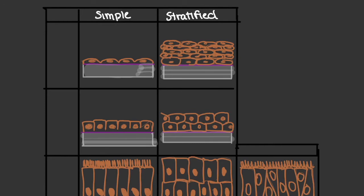When we use the term stratified, we're saying there are multiple layers of cells that cover the basement membrane, which provides a greater degree of protection for the body. The terms we use to represent the shape of our epithelial cells are either squamous, cuboidal, or columnar.